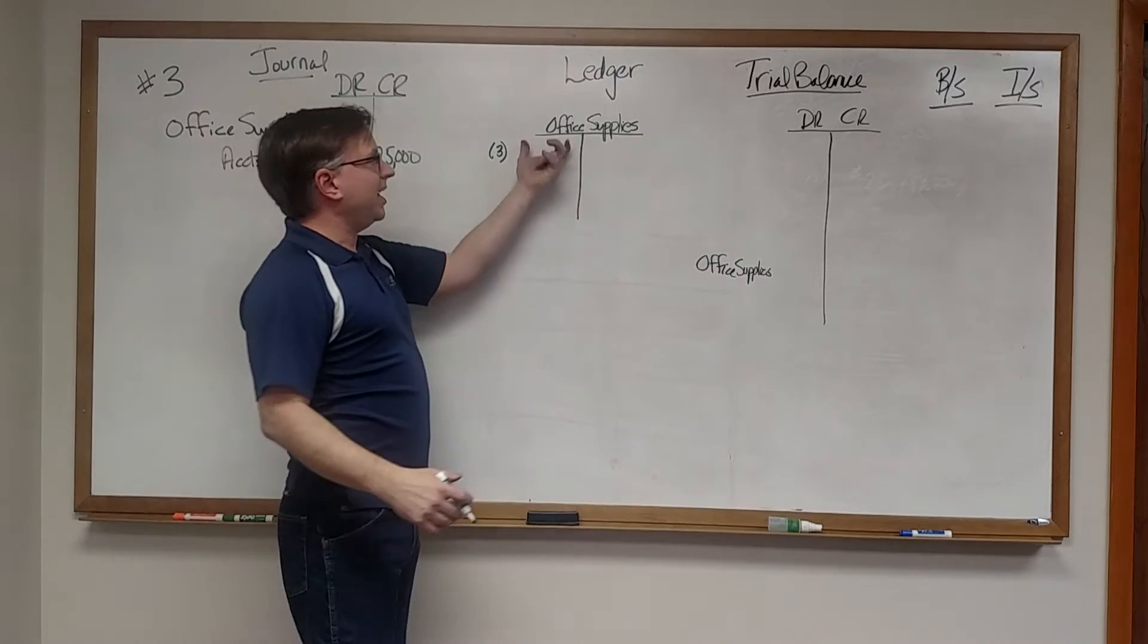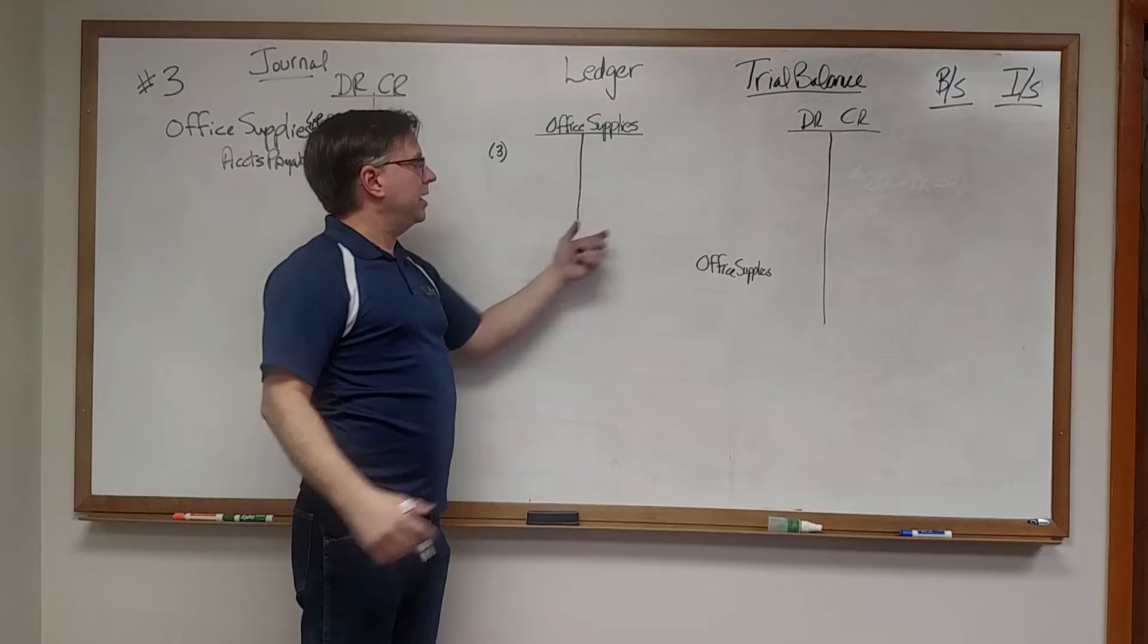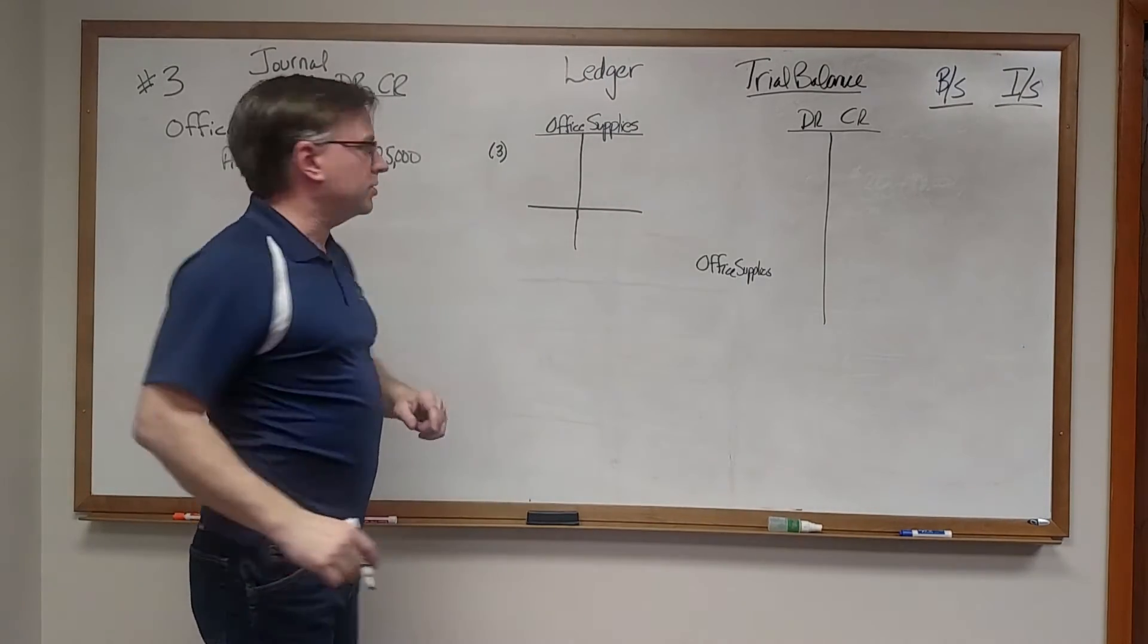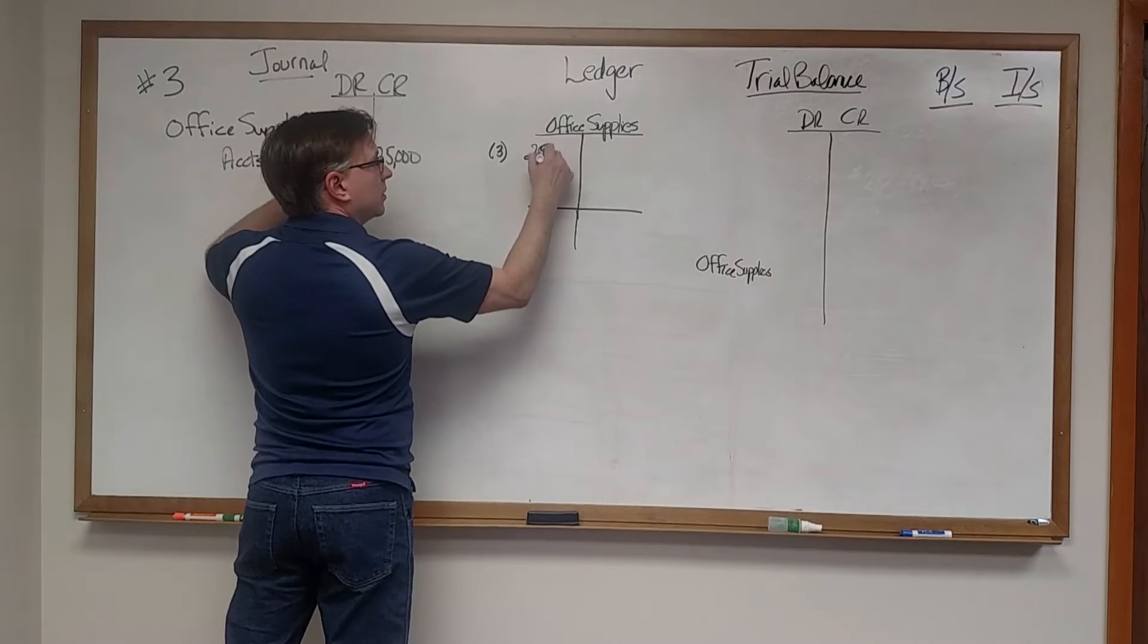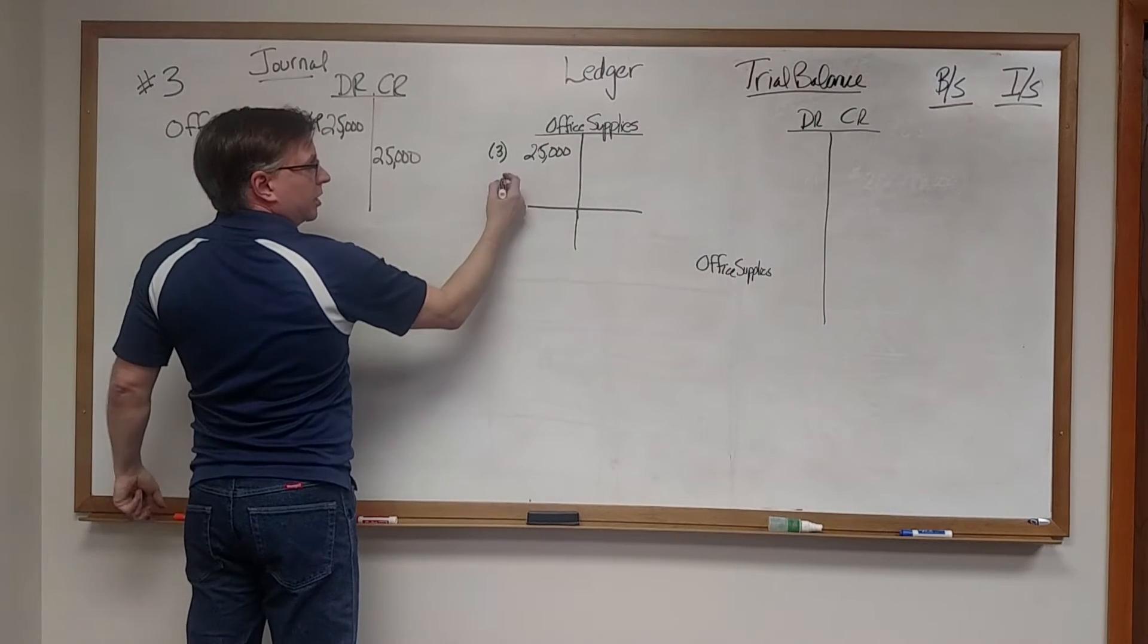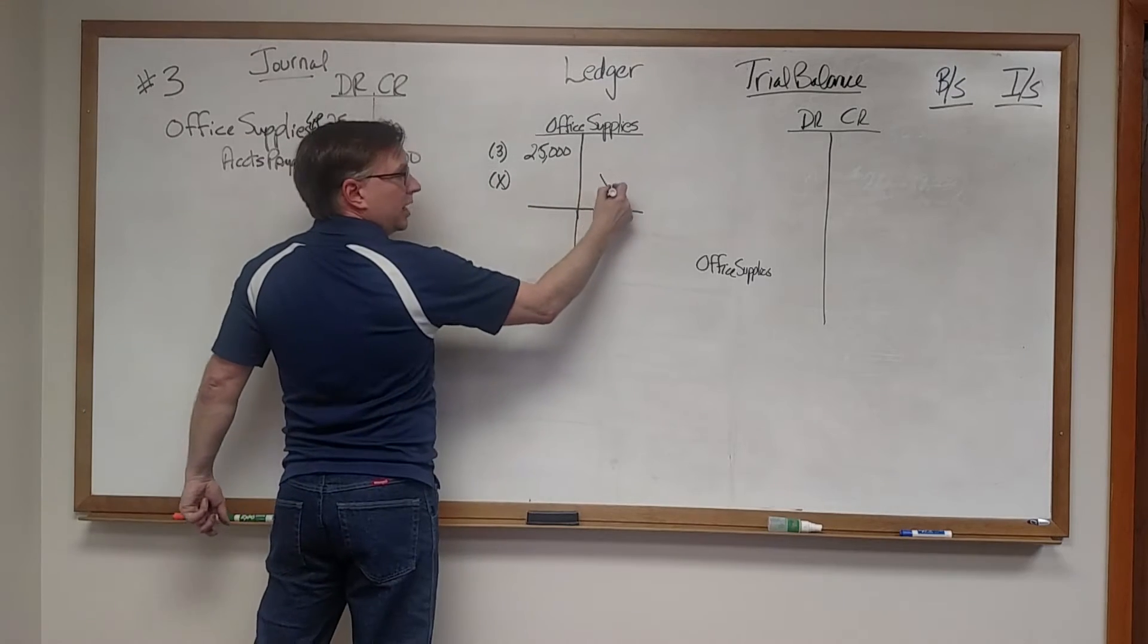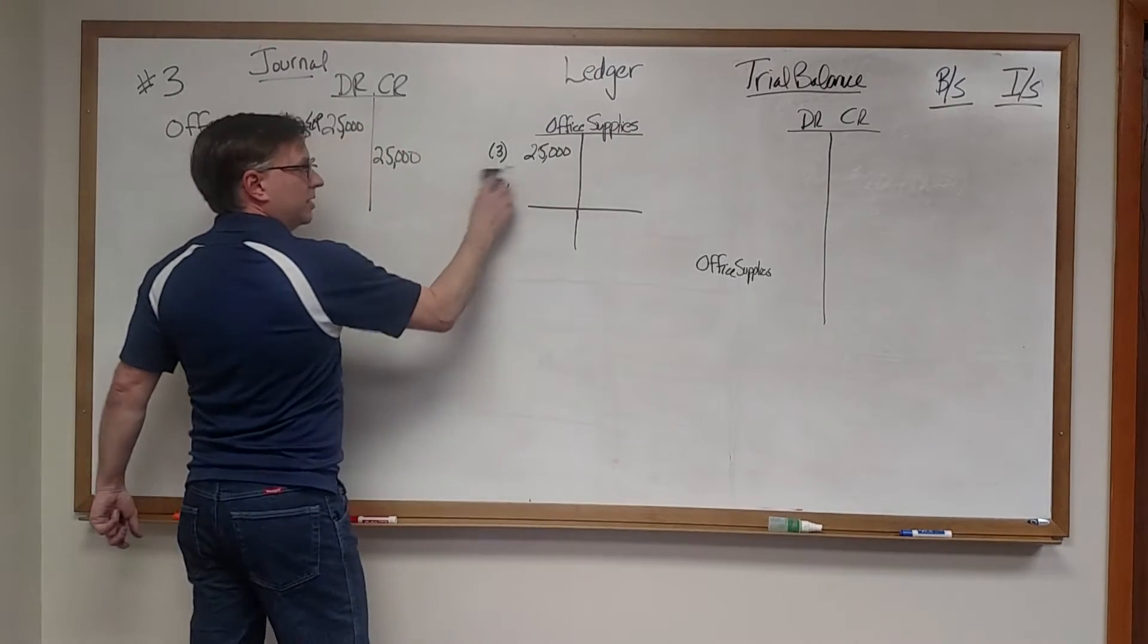And on the ledger, if you'll recall, we had all the debits and all the credit transactions that have happened to come up with a balance. So in this case there was only one transaction and it was a debit. So it's still on the debit side of office supplies. If for some reason we had another transaction that reduced office supplies, we might credit it. But that's not the case here. We just have the one transaction.